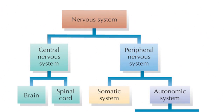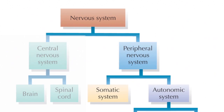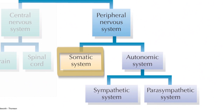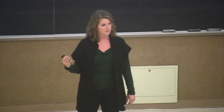We can further break this down. We have our central nervous system — brain and spinal cord. We also have our peripheral nervous system, which can be further broken down into our somatic system and our autonomic system. The somatic system — think soma, like the neuron cell body — is a body system. And then we have the autonomic system, which is really involved in automatic processes.